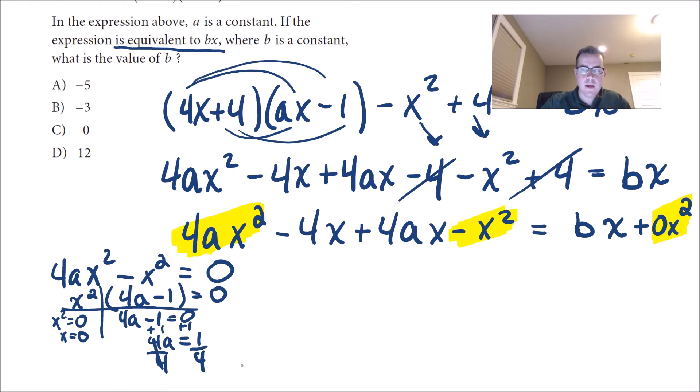So now I have my a value here, a has to be one fourth. And now I can substitute that back into my problem here. So if I did that, I'm going to start right here.